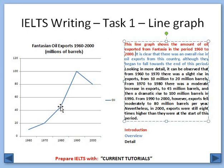Then there was a dramatic rise from 1980 to 1990 — it rose from 45 to 100 million barrels. From 1990 to 2000, however, the exports fell moderately to 80 million barrels per year. Nevertheless, in conclusion we say that in 2000 the exports were still 8 times higher than they were at the start of the period.